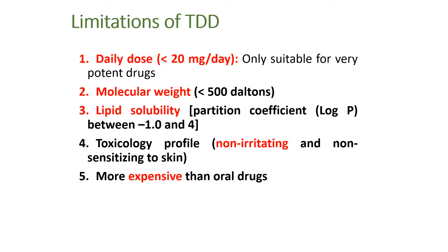On the other hand, transdermal drug delivery systems have limitations. For example, we cannot give a high dose by the transdermal route. If the drug dose is more than 20 mg per day, it will never be possible to give it transdermally because you would need too many excipients and the weight of the cream or ointment would be huge — you cannot apply a huge amount on the skin. So the drug must be potent and the dose should be less than 20 mg, unless you spread it over a very large surface area of skin.